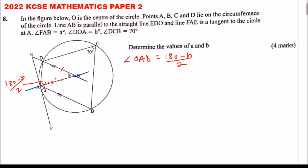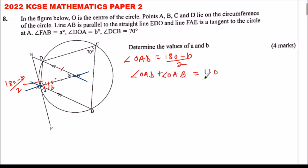Extending the lines and using the fact that AB is parallel to EDO, angle OAB and the angle at D are alternate angles, so angle OAB equals b. Since angle DAB equals 110 degrees, we can write: angle OAD plus angle OAB equals 110, that is (180 minus b)/2 plus b equals 110.